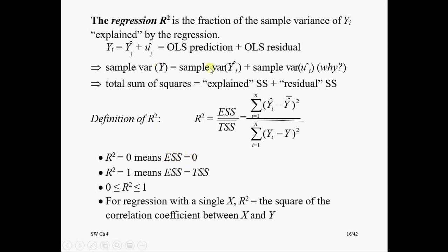R-squared equals one means that total sum of squares is equal to explained sum of squares. Usually it's not the case. R-squared is between zero and one, so long as you include intercept in the model. For regression with a single regressor X, R-squared is simply square of simple correlation coefficient between X and Y.